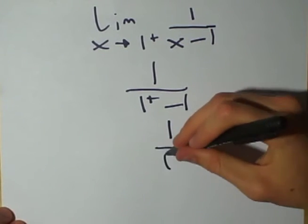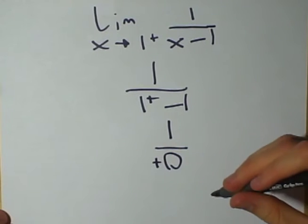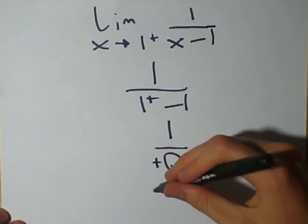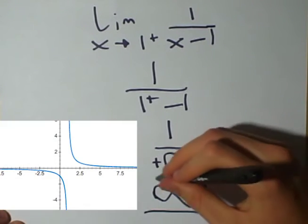Then, combine them, which forms 1 over positive 0. Finally, 1 over 0 equals infinity. And there you have it.